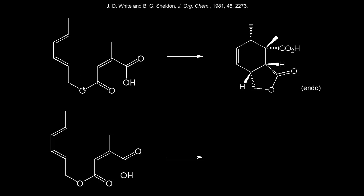If a diene and a dienophile are both contained in the same molecule, that molecule can undergo an intramolecular Diels-Alder reaction. This molecule on the left undergoes an intramolecular Diels-Alder reaction to form the product on the right. Notice how we form two rings for our product, so this is a pretty cool reaction.